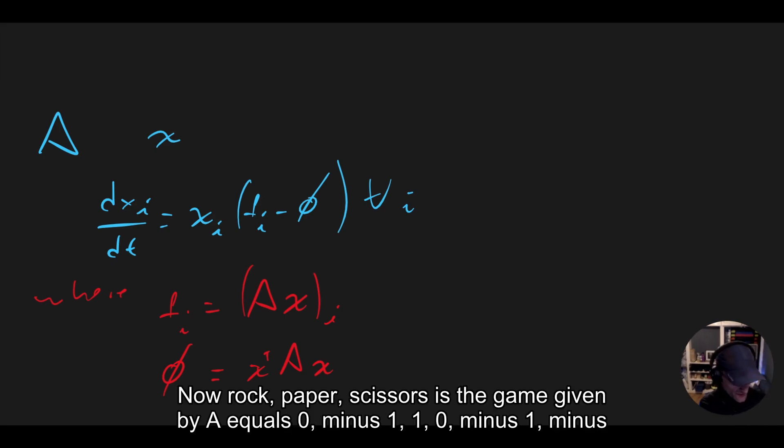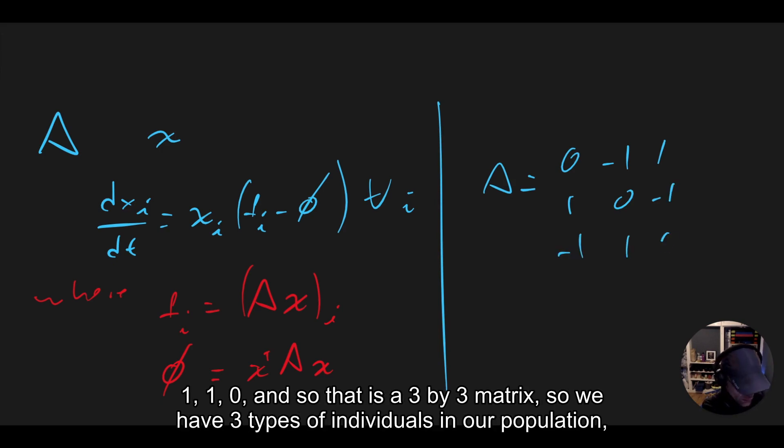Now, rock, paper, scissors is the game given by A equals [0, -1, 1; 1, 0, -1; -1, 1, 0]. And so that is a 3 by 3 matrix, so we have three types of individuals in our population.